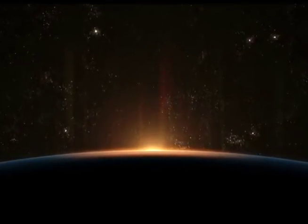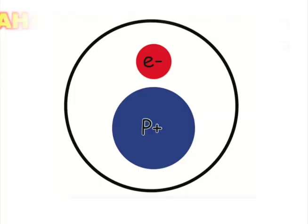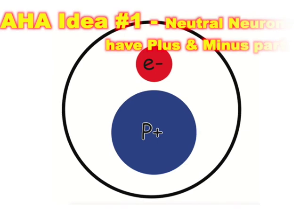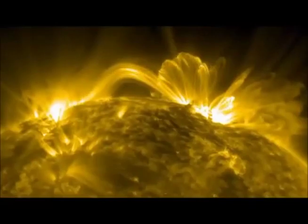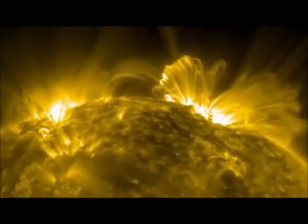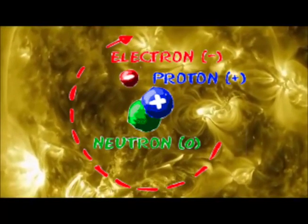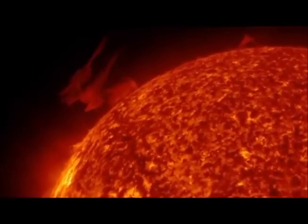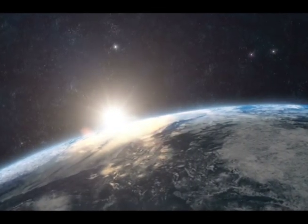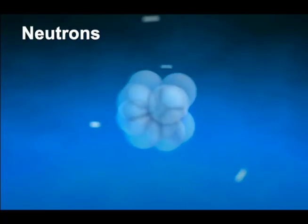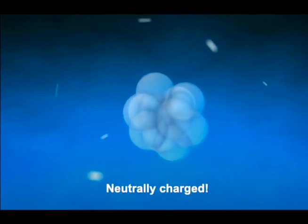Next, we need stars — not movie stars, but sun stars. A neutral neutron has positive and negative parts caused by superheat and pressure inside stars. A new aha idea is that the negative electron stops spinning and is pulled very close to the positive proton. Huge amounts of heat are given off inside our star that we will one day see as sunshine. The close-packed positive and negative parts make a neutrally charged neutron.